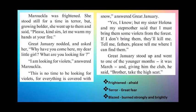Marukkala was frightened and stood still for a time in terror, but growing bold she went up to them and said: 'Please, kind sirs, let me warm my hands at your fire.' Great January nodded and asked her: 'Why have you come here, my dear little girl? What are you looking for?' Marukkala answered: 'I'm looking for violets.' January replied: 'There is no time to be looking for violets, for everything is covered with snow.' Marukkala said she knew, but her sister Holina and stepmother said she must bring violets or they would kill her. Great January stood up, went to one of the younger months — it was March — and giving him the club said: 'Brother, take the high seat.'